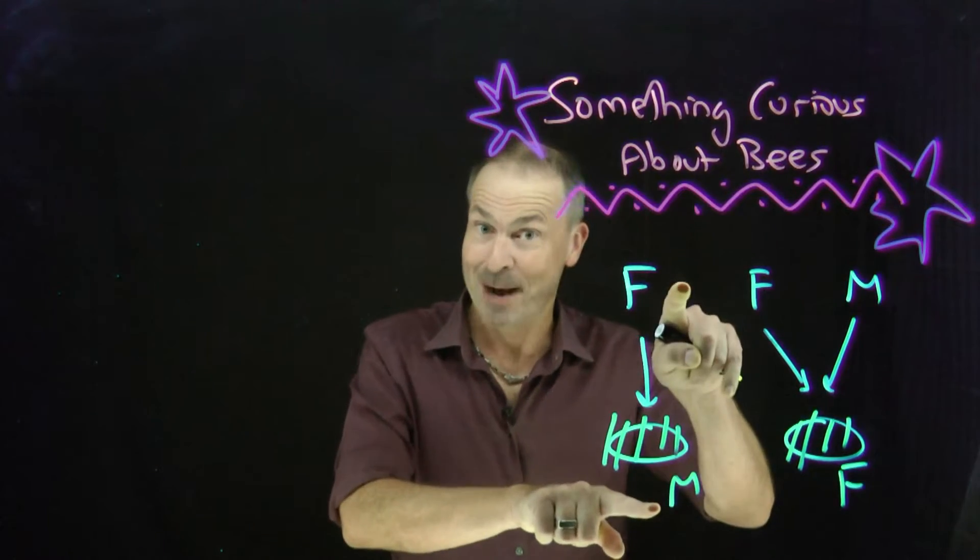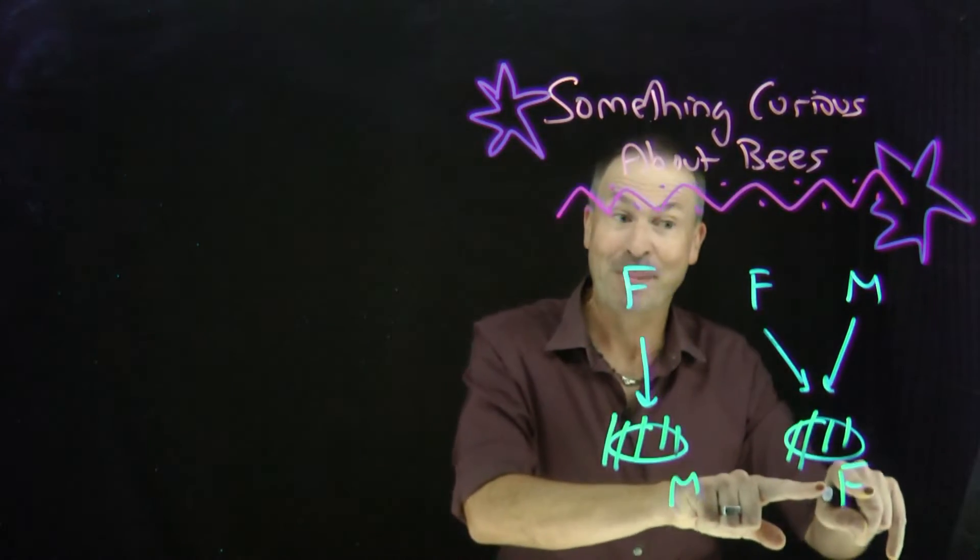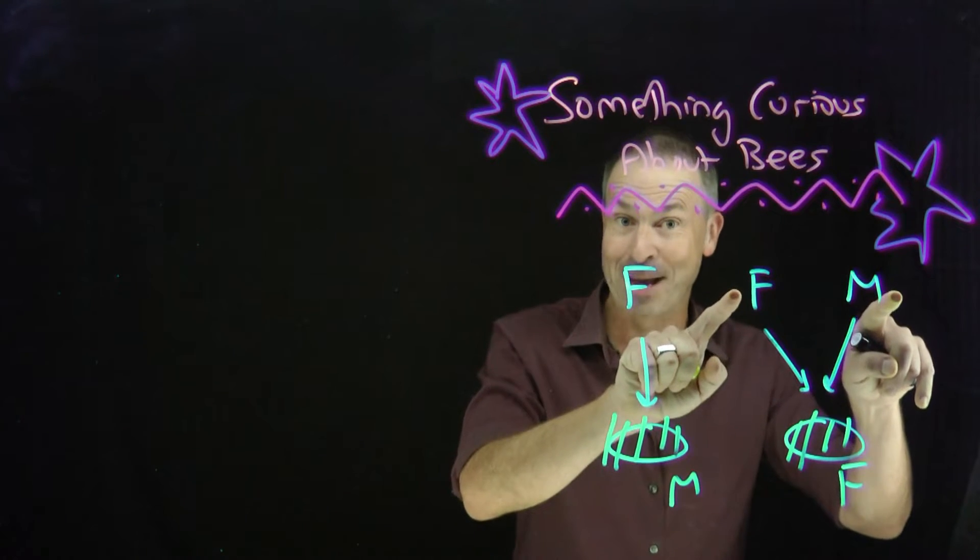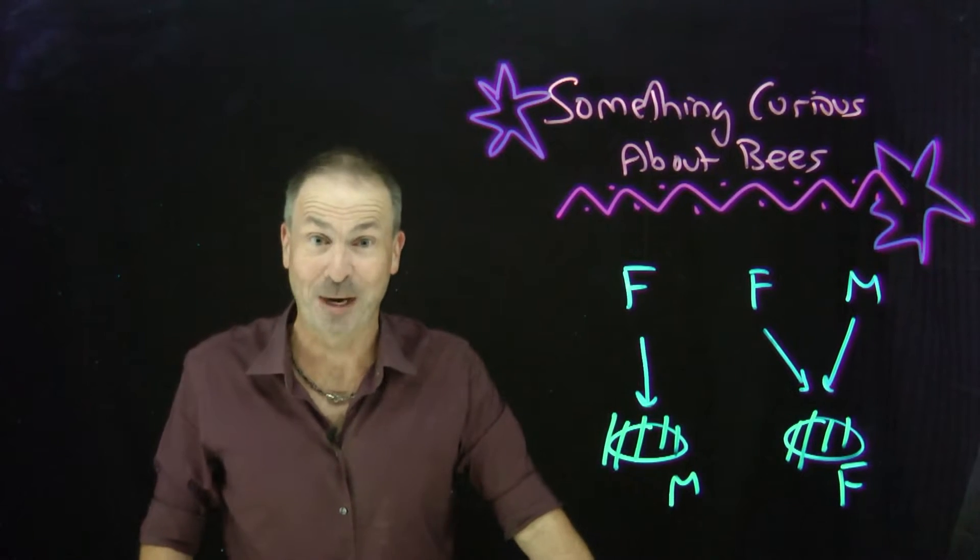So every male bee has just one parent, a female, but every female bee has two parents, a female and a male, which makes for a very curious family tree of a bee.